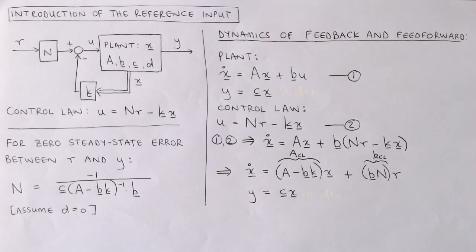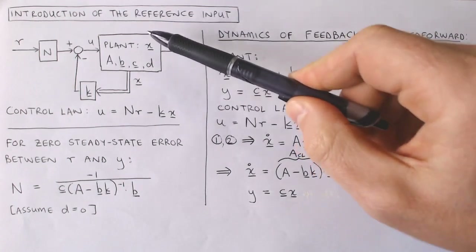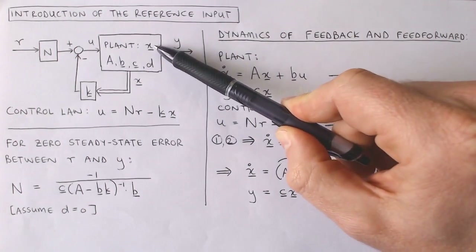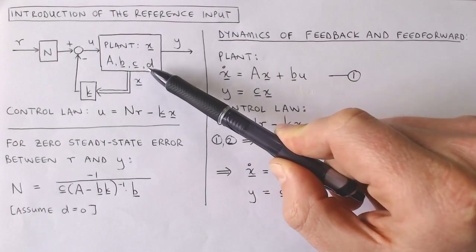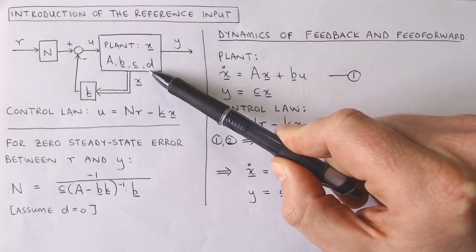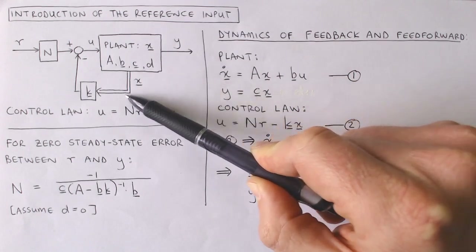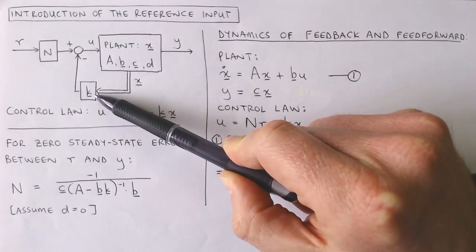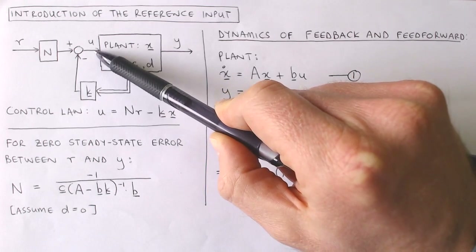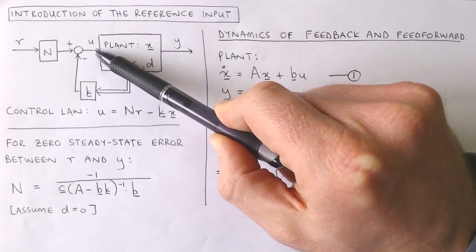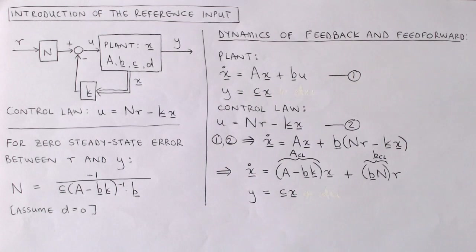The block diagram of the plant with the compensator so far is shown here. This block is the plant described by states x and system matrices a, b, c and d. We have previously added the state feedback where we multiply the states with a feedback gain k to form the plant input. Such a system is called a regulator where the states are controlled to be zero.